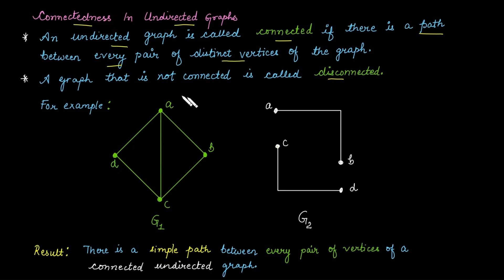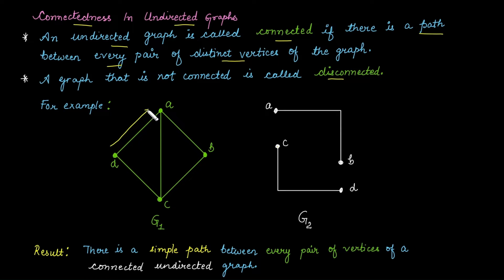For example, graph G1 is connected because in this graph we will get at least one path between each pair of vertices. For example, if you want a path that starts from vertex D and ends at B — the answer is yes. You can start from vertex D, then move to vertex A, then go to vertex B. So there is a path of length 2: D → A → B.